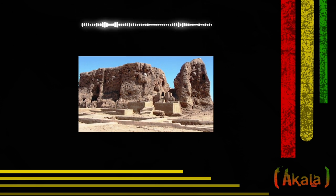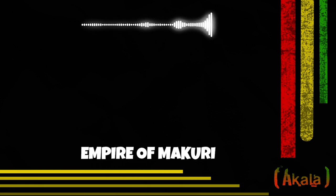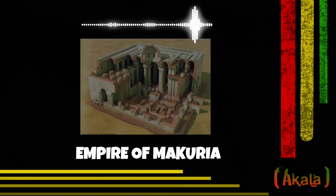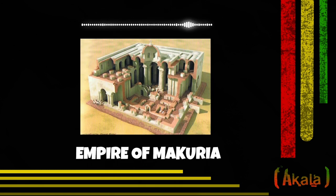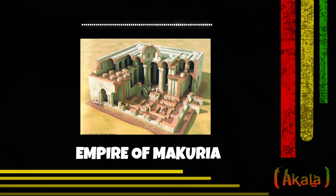Then you also have a Christian kingdom centuries later, around the year 1000 AD — the empire of Mercuria — and they built churches like this. This is a reconstruction by a Polish archaeologist of a church from the empire of Mercuria in what is today Sudan. These are some Nubian pyramids.